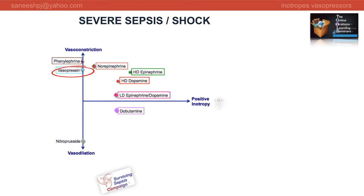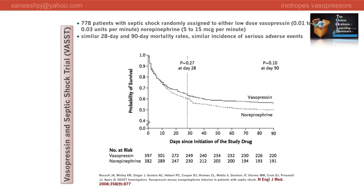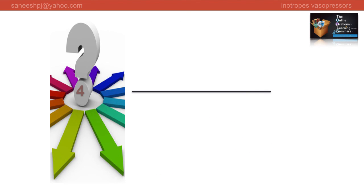Low-dose vasopressin can be added to norepinephrine with the intent of either raising mean arterial pressure or catecholamine sparing by reducing norepinephrine dosage. However, low-dose vasopressin is not recommended as the single initial vasopressor. Higher-dose vasopressin should be reserved for salvage treatment. Studies like the vasopressin and septic shock trial failed to show significant mortality benefit with low-dose vasopressin or vasopressin-norepinephrine combination. Similar results were seen with epinephrine versus norepinephrine-dobutamine combination.